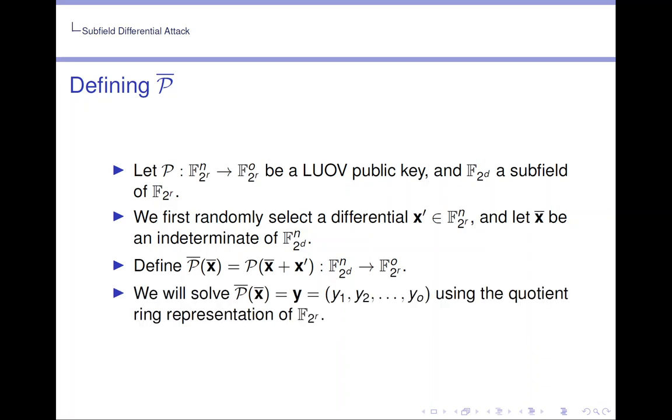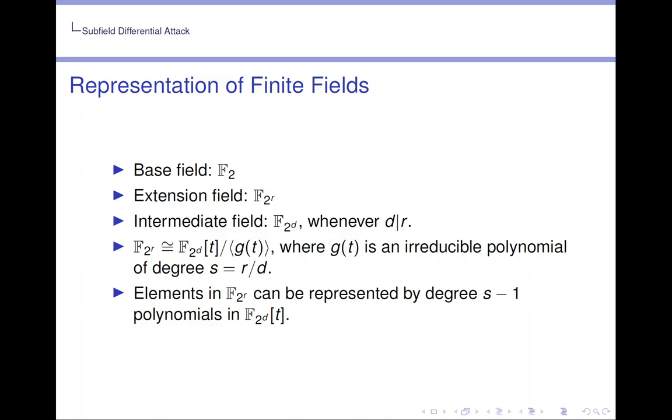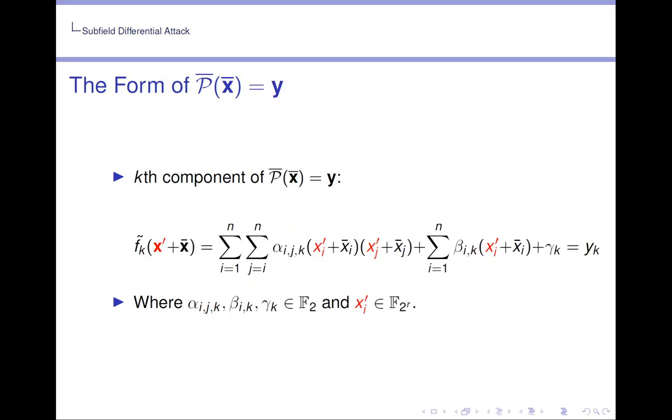We will solve P̄ equals y using the quotient ring representation of F_{2^r}. Now to remind ourselves what that is, if I take a base field F_2 and an extension field F_{2^r}, there will always exist an intermediary field F_{2^d} whenever d divides r. Now F_{2^r} is isomorphic to the following quotient ring, where G(T) is an irreducible polynomial of degree s equals r divided by d. Elements in F_{2^r} can thus be represented by degree s minus 1 polynomials in the polynomial ring over F_{2^d}.